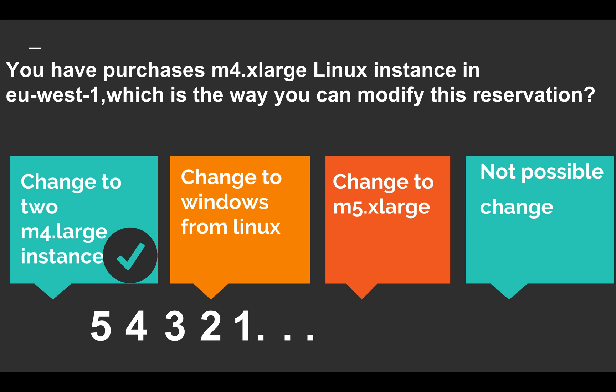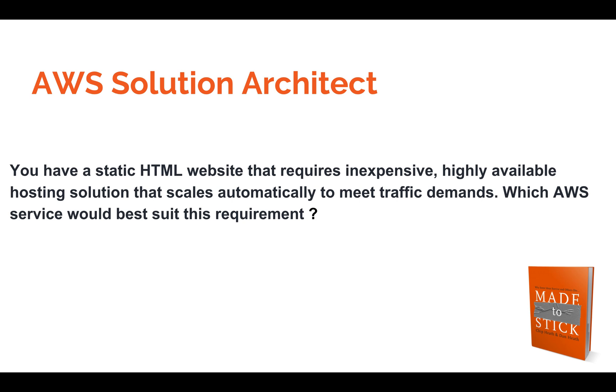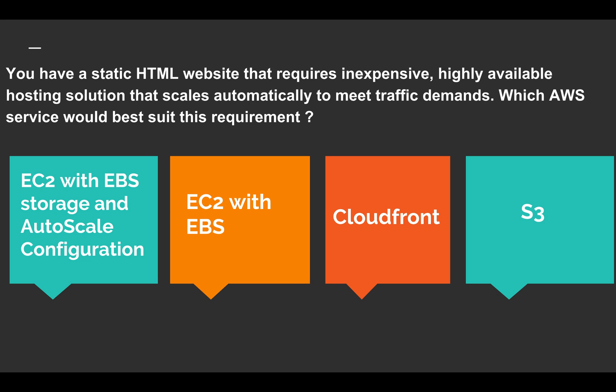Next question: you have a static HTML website that requires an inexpensive, highly available hosting solution that scales automatically to meet traffic demands — which AWS service is most preferable? The options are: (1) EC2 with EBS storage and auto scale configuration, (2) EC2 with EBS, (3) CloudFront, and (4) S3. You have a few seconds to write your answer in the comment section.